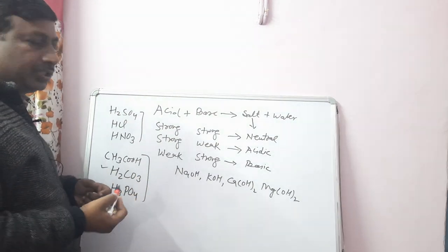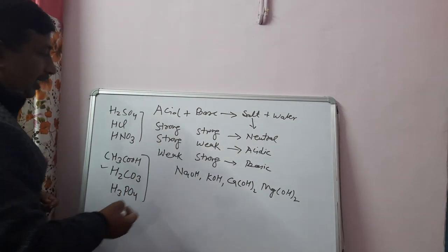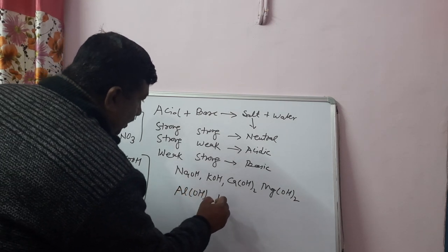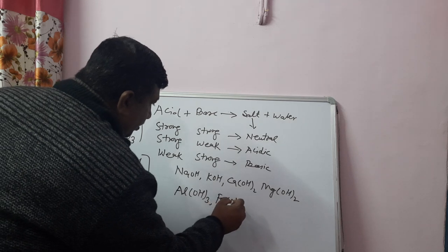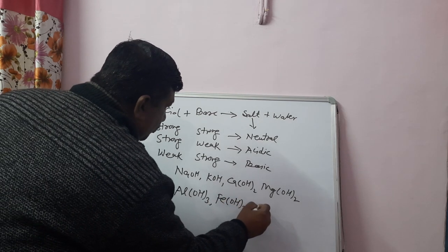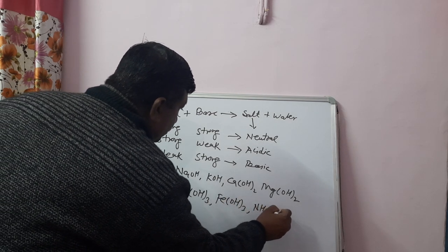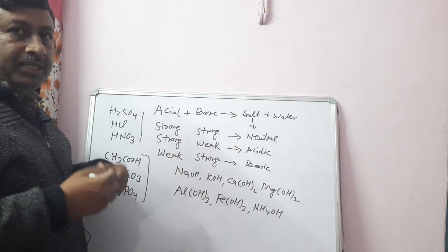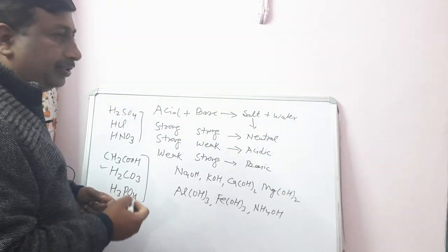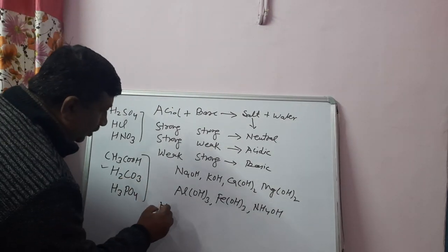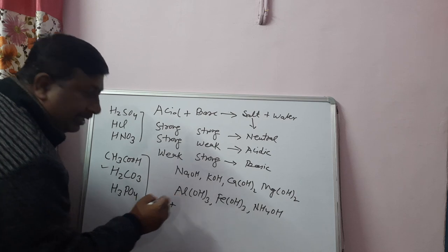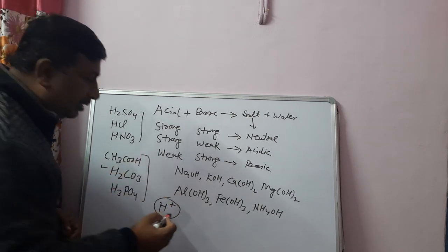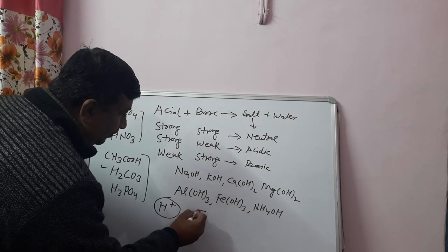Weak bases are ammonium hydroxide and ferric hydroxide. Strong bases are completely ionized in water and give hydroxyl ions. Strong acids give 100% hydrogen ions when ionized, and strong bases give hydroxyl ions when they ionize in water.